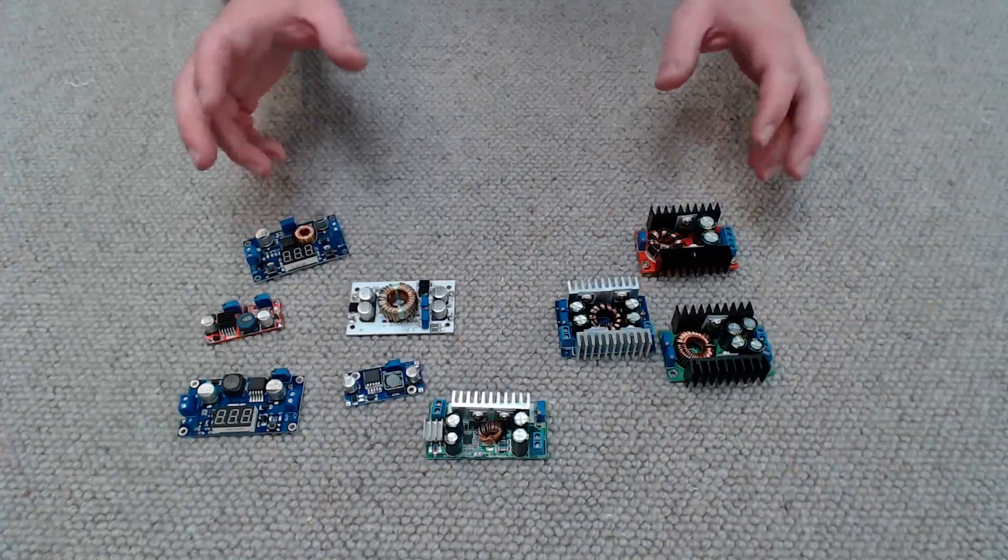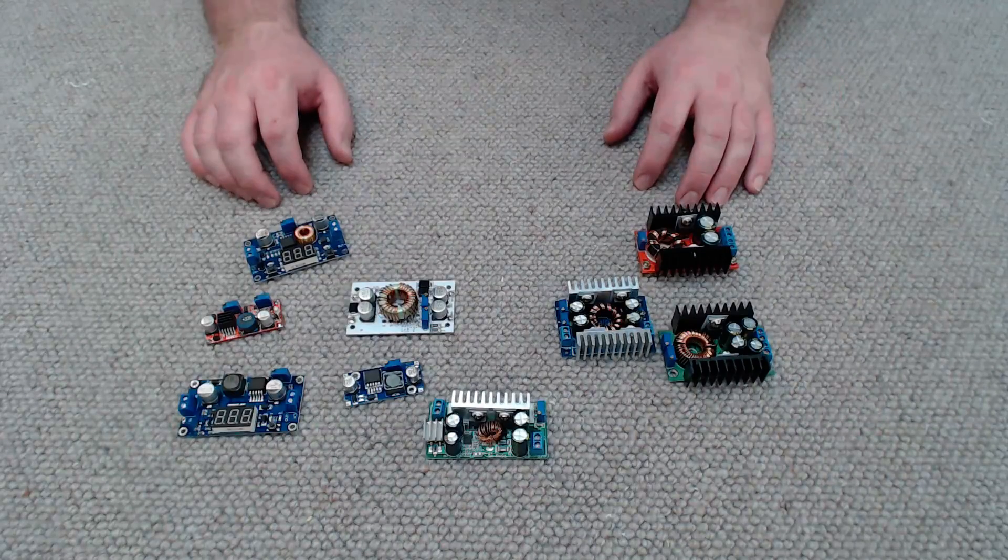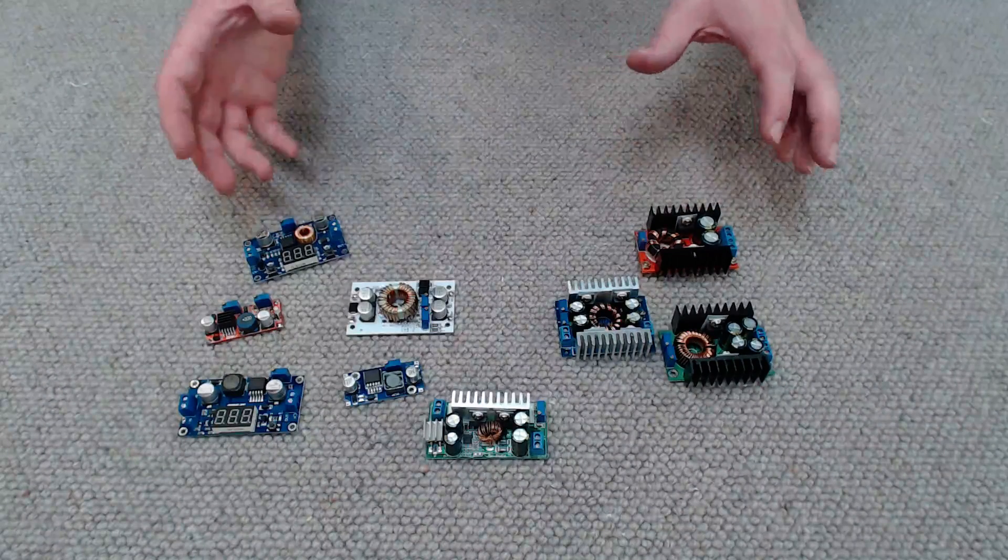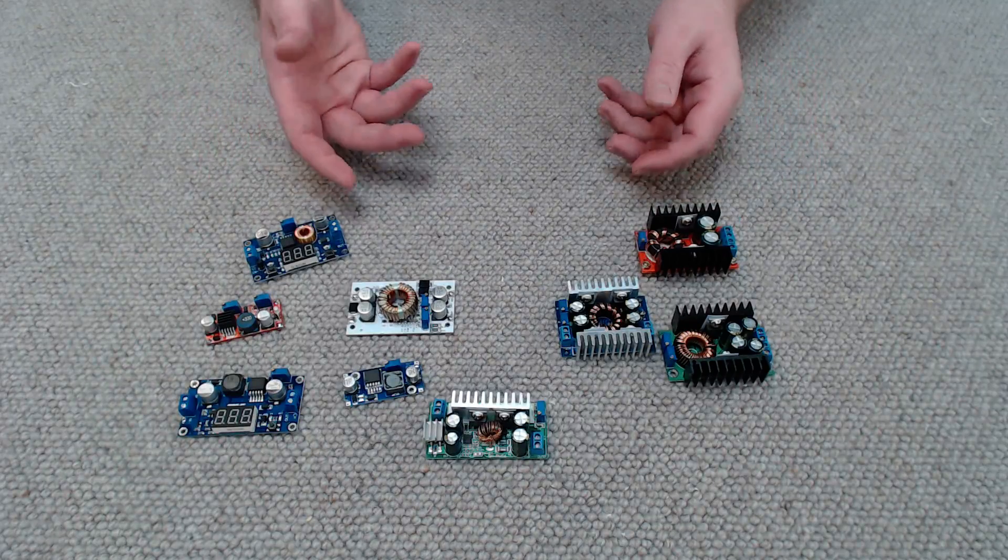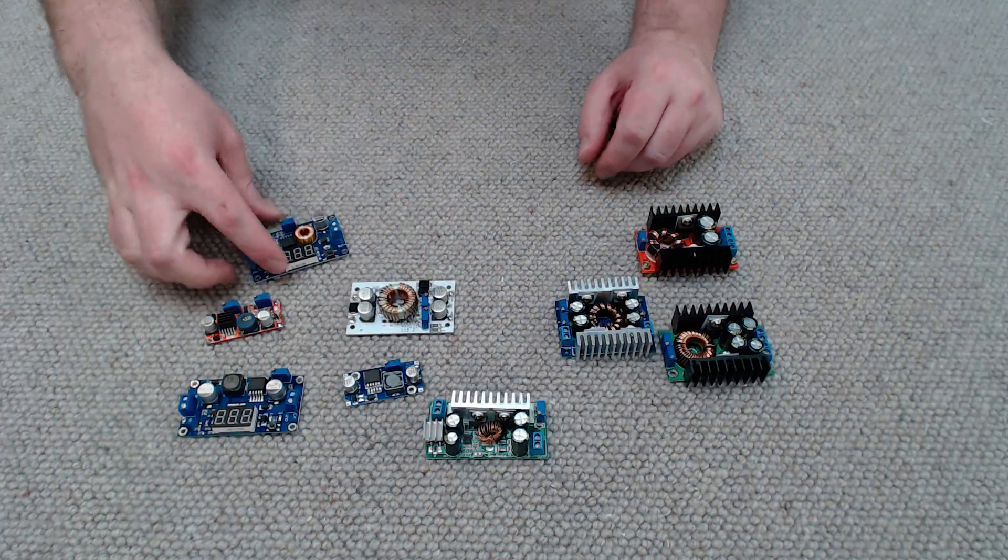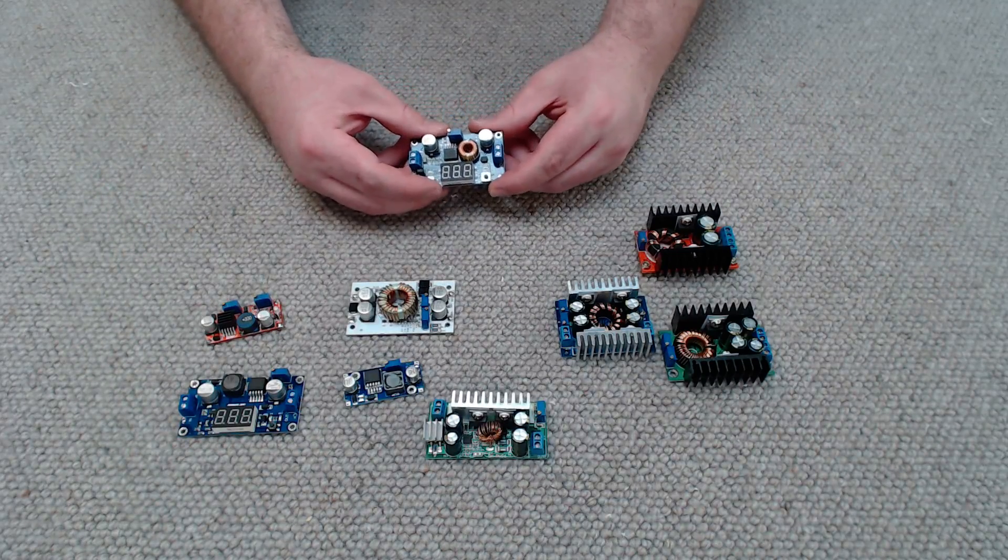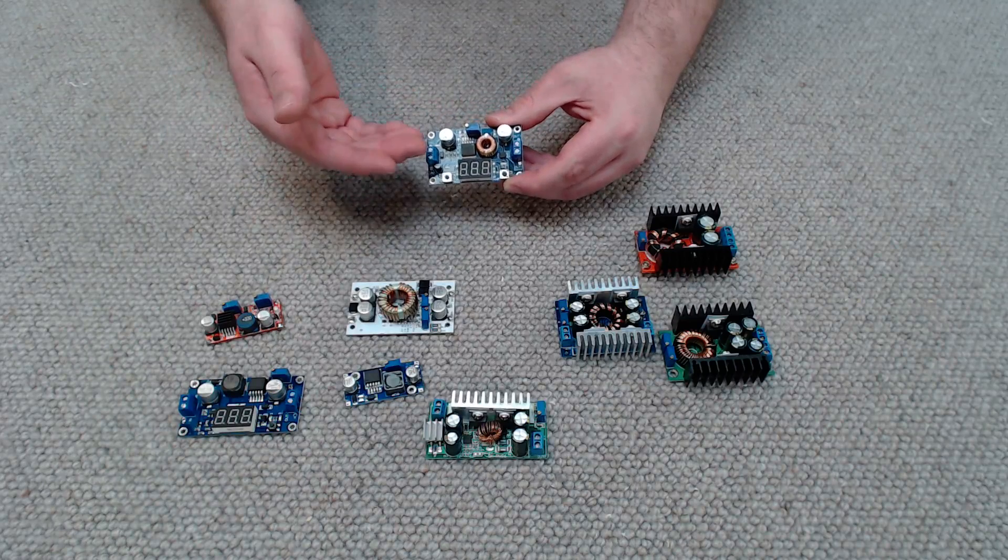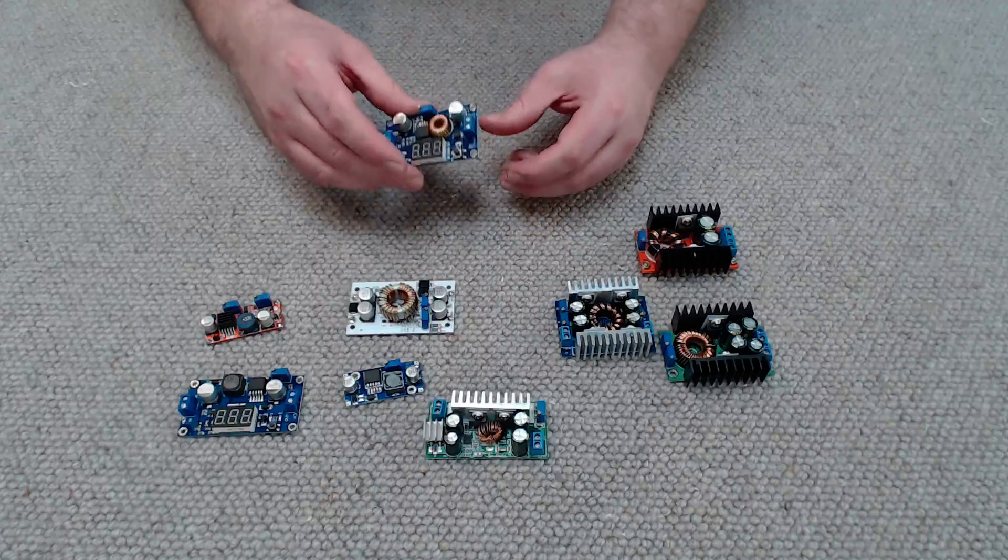So here's a small sample of some of the boost and buck converters that I happen to have on hand at the moment. And fundamentally they all do the same job. However some have features which would be handy in some applications. For example this one has a voltmeter on it which can measure the input and output voltage. You can also get boost buck converters that can also measure how much current is being passed through the unit which can be very handy.